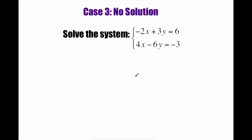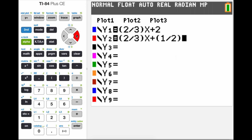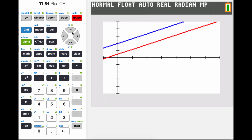Case 3 is the no-solution case. Looking at the x's — we've got -2 and 4 — so I'll multiply the top equation by 2, giving -4x + 6y = 12. Adding the equations: x's cancel, y's cancel, giving 0 on the left-hand side, but the right-hand side gives 9 — so 0 = 9. That's a red flag. Graphically, rearranging gives y = 2/3 x + 2 and y = 2/3 x + 1/2. These lines are parallel — they never cross — which is why there are no solutions.